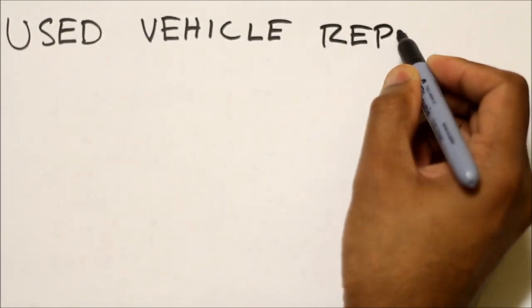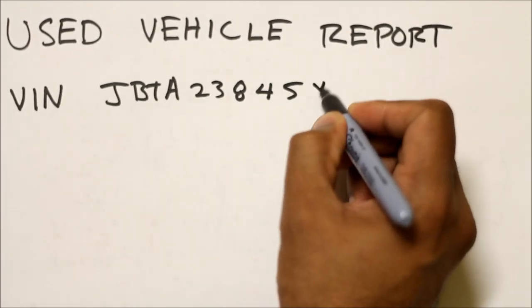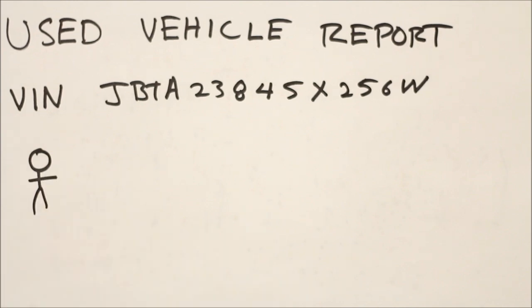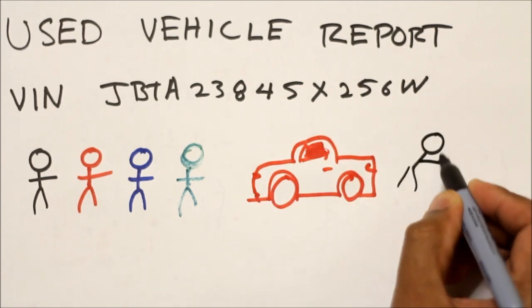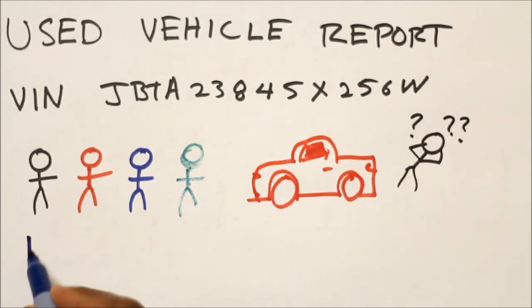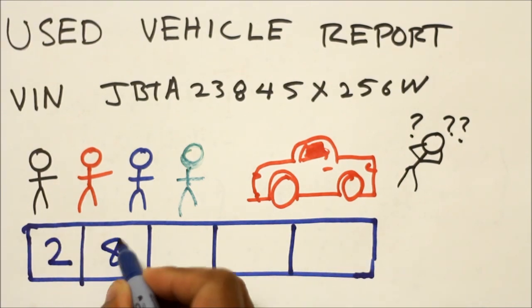Purchase a used vehicle information report or UVIP. A UVIP will tell you basic information about the car such as the make, model and the VIN. It will also tell you how many past owners the car has had. If it's changed hand many times, it could be a lemon. The report will also give you an insight onto the odometer history.